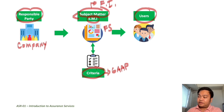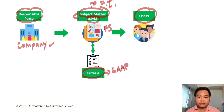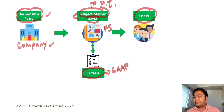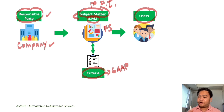The users of financial statements — for example, investors and creditors — face a problem: there is an inherent bias on the part of the information provider, the company, to provide information that is only favorable to them, since the performance of the responsible party will also be based on the information they provide. That is why users will not formally accept the information provided by the responsible party at face value — they want a third party to validate the information before using it for decision-making purposes.